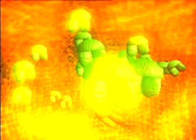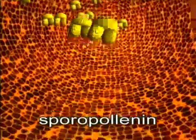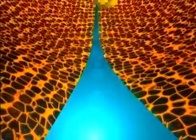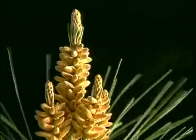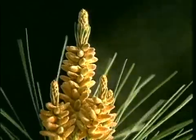A final deposit of sporopollenin completes the formation of the pollen grains. They are released when the microsporangium opens. The pollen grains are now easily dispersed by air currents.